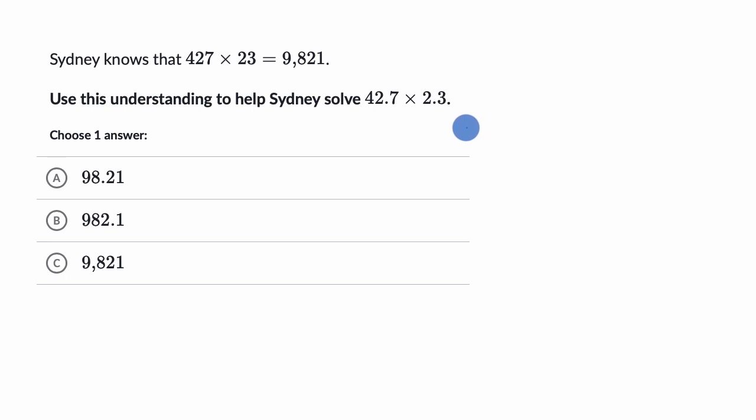Now let's do this together. So you might realize that 42.7 is just 427 with a decimal between the two and the seven. Or another way to think about it is, if you were to take 427 and move the decimal one to the left, you are essentially dividing by 10 to get to 42.7.